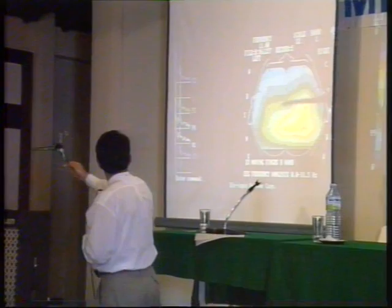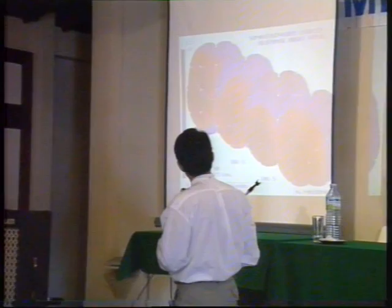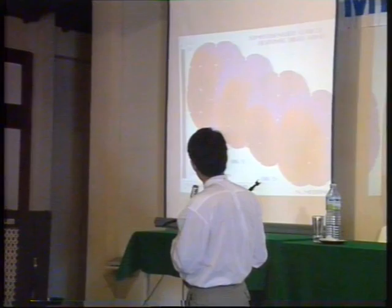The same happens when you use the right hand — you see a depression on the left side and also on the right side. Now this is a display of event somatosensory evoked potentials.